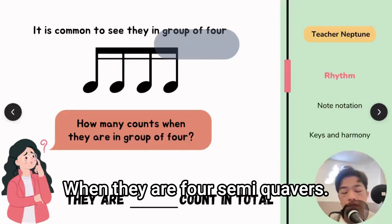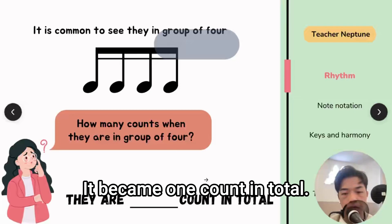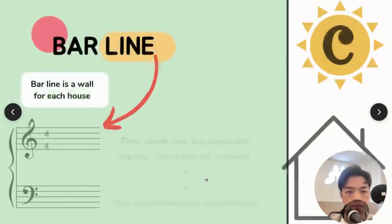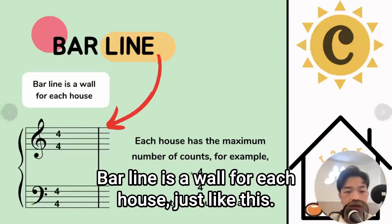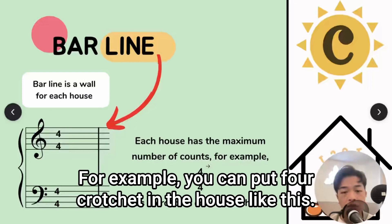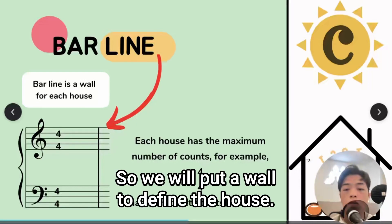So we are learning a new thing called bar line. Bar line is a wall for each house, just like this. For example, you can put four crotchets in a house like this. So we will put a wall to define the house.